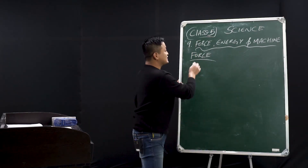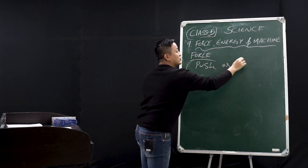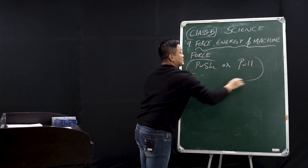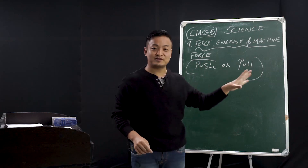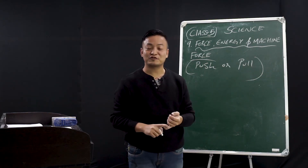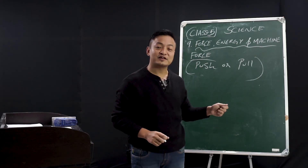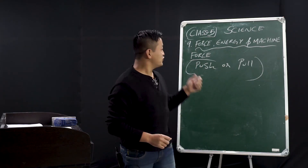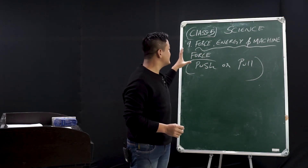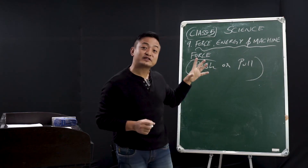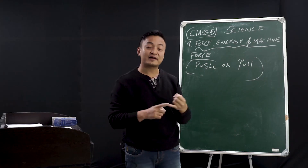Force — here in the textbook it says anything we can push or pull. A push or pull of an object is a force. To push something or to pull something, you need a force. To push a chair or a table, you need a force. So force and motion are related together. Today we will study different types of force, what are the effects of force, what force can do, and types of force.